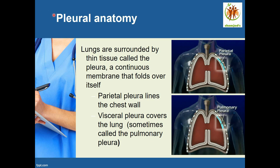Now we will discuss pleural anatomy. The lungs are surrounded by thin tissue layers called the pleura — a continuous membrane that folds onto itself. We have two types: parietal pleura, which lines the chest wall, and visceral pleura, also known as pulmonary pleura, which covers the lungs. The gap between the parietal and visceral pleura is called the pleural cavity, and it is filled with pleural fluid. The function of the pleural fluid is to avoid friction during breathing.